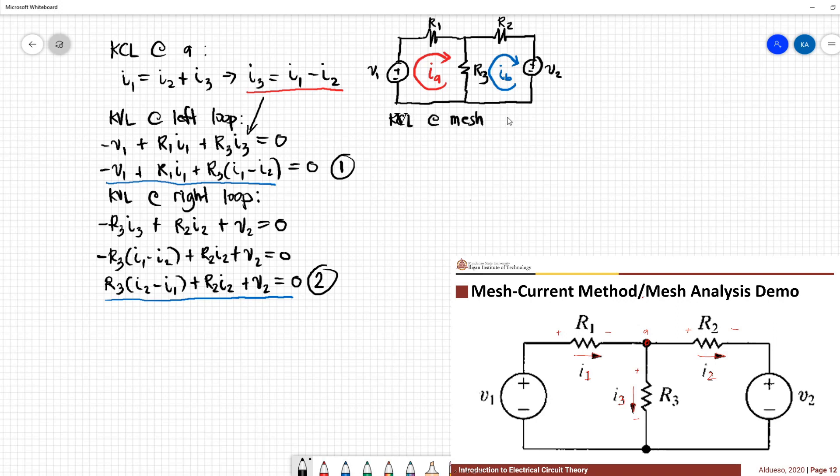Applying KVL at mesh Ia, we have negative V1 plus R1 times Ia plus R3 times (Ia minus Ib) equal to zero.